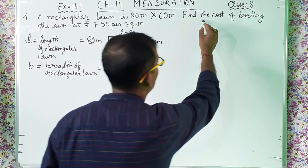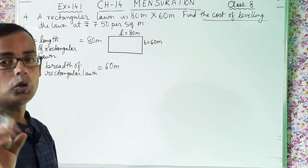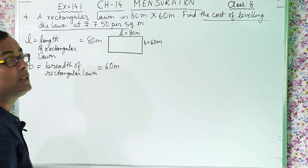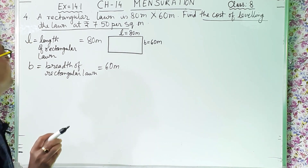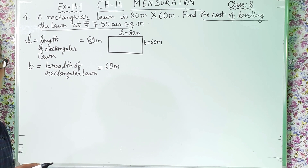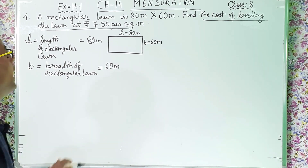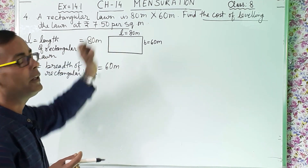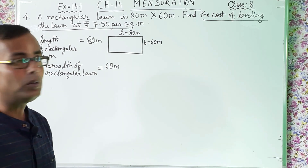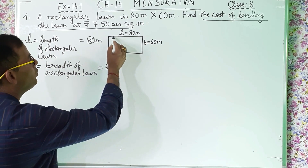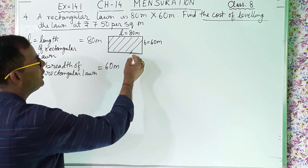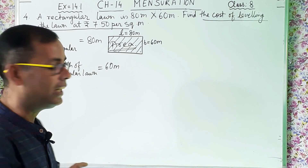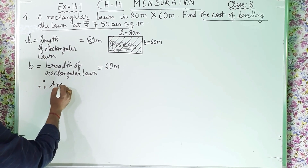B means breadth of rectangular lawn, which is 60 meter. Now what you have to find out is the cost of leveling the lawn at rupees 7.50 per square meter. That means you have to find out the area. Leveling the lawn means the inside portion, which is known as the area.